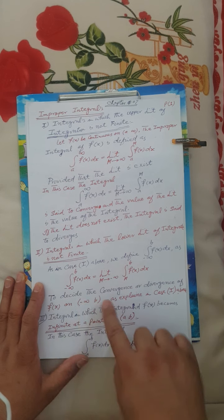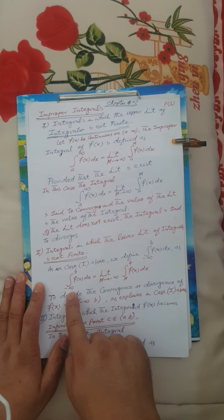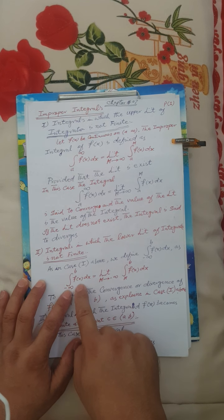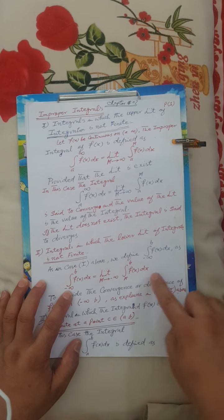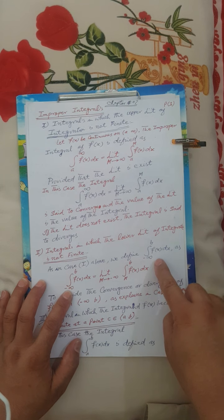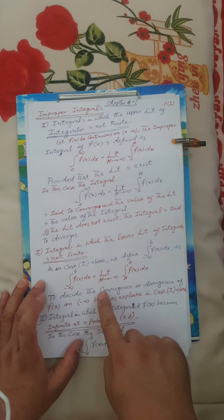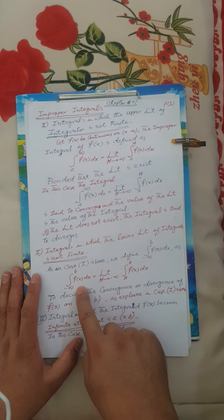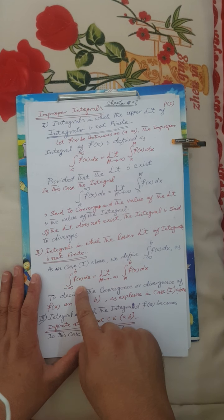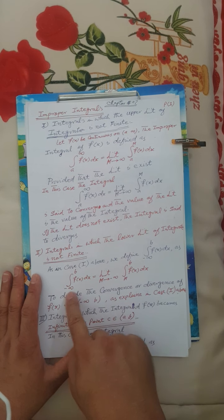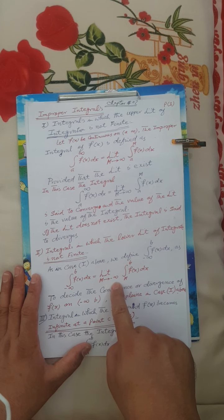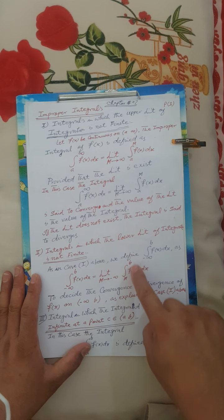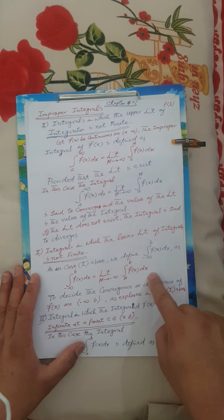The second condition: the lower limit of integration is not finite. That is, if f(x) is continuous from minus infinity to b, then the improper integral of f(x) on that interval is equal to the limit as m tends to infinity of the integral from −m to b of f(x) dx.